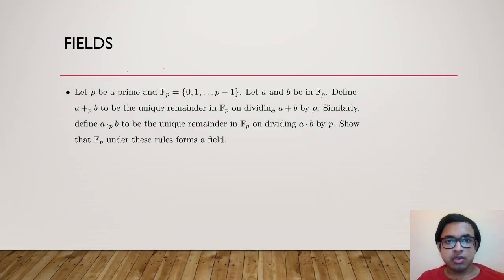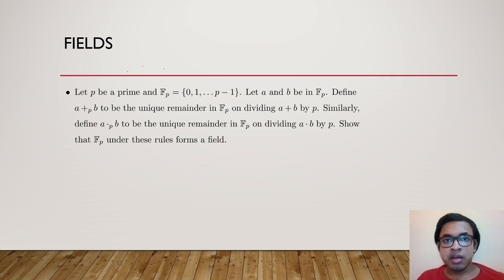The last exercise is to show that if p is a prime and we consider the set F_p = {0, 1, ..., p−1}, with the sum of a and b defined as the unique remainder on dividing a+b by p, and the product defined as the unique remainder on dividing a·b by p, then F_p under these rules forms a field.